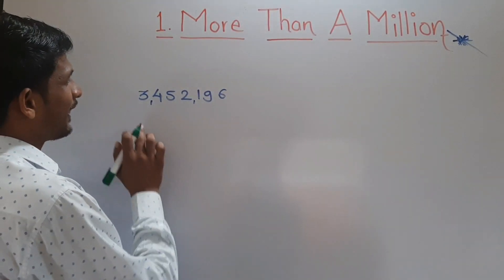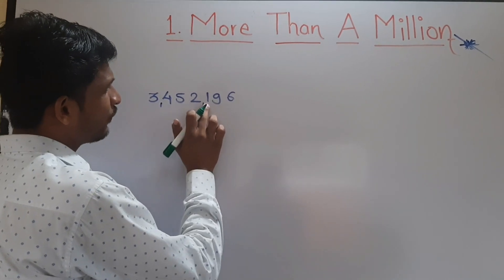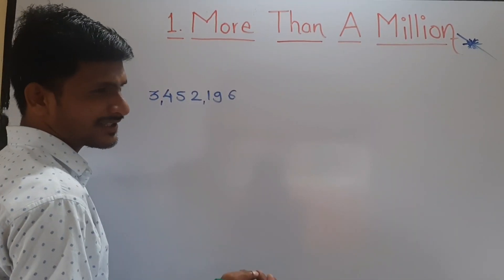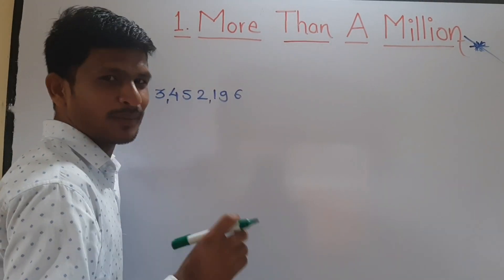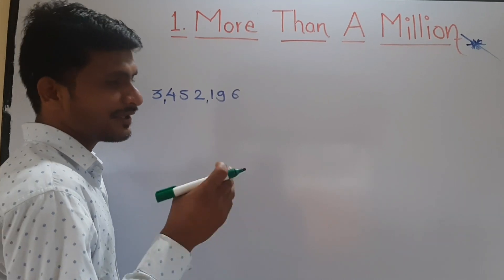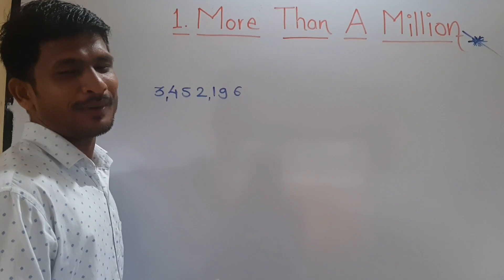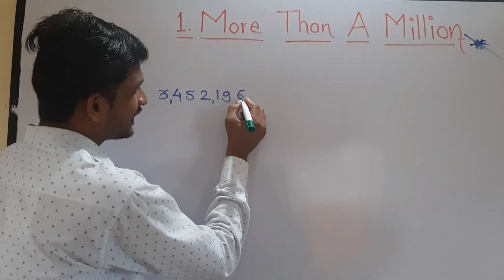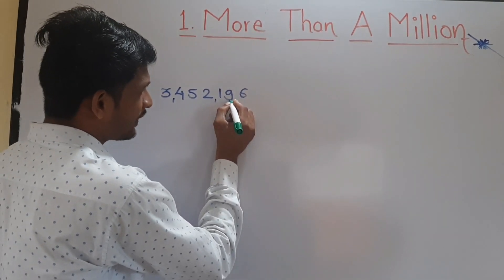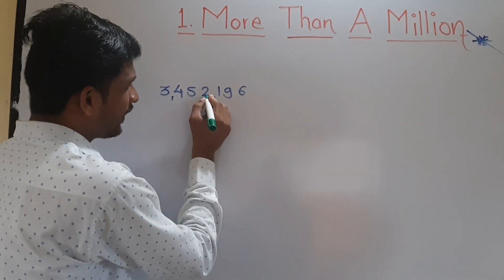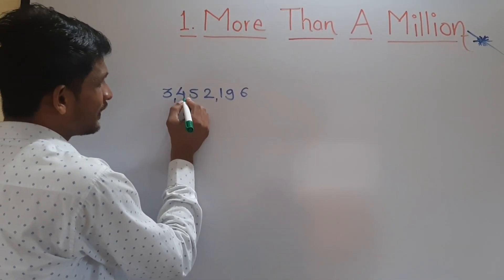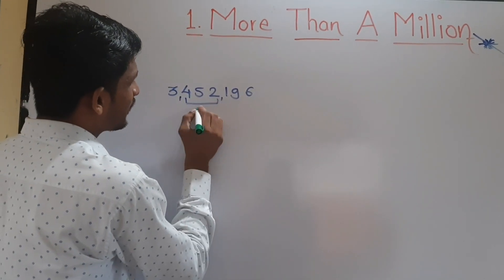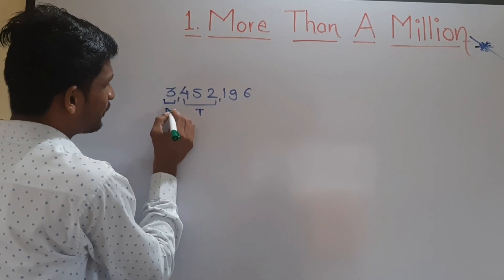I have written the number 3,452,196 and commas are placed according to the international system of numeration. As we learned, in the international system we place commas after every 3 digits. Now we expand: 6 is in the ones place, 9 in the tens, 1 in the hundreds, 2 in the thousands, 5 in the ten-thousands, 4 in the hundred-thousands, and 3 in the millions.